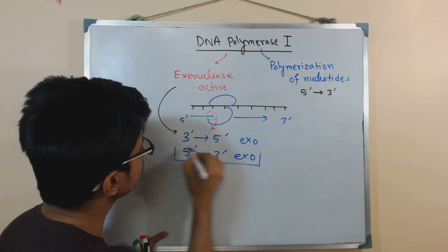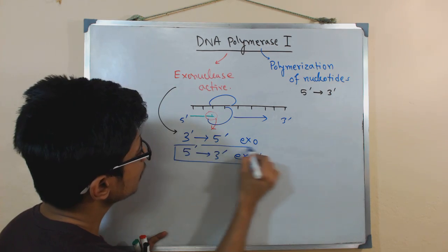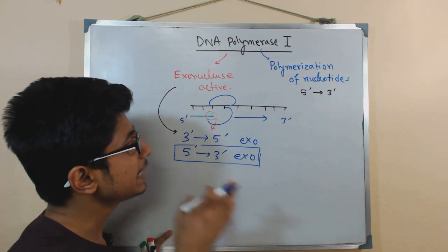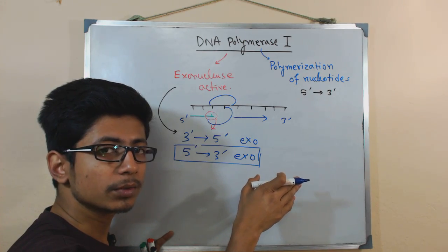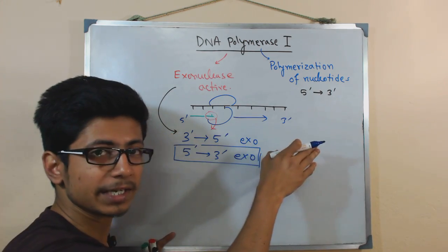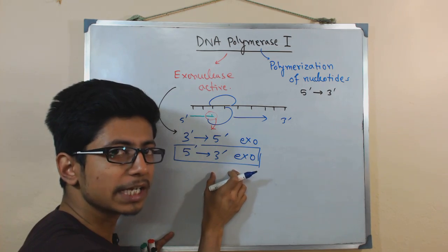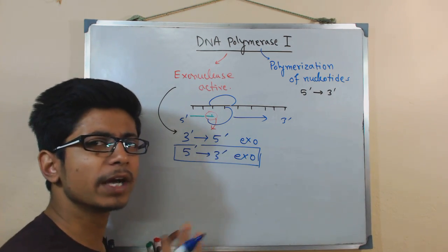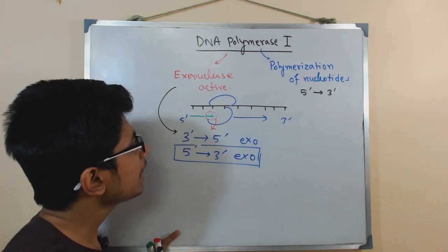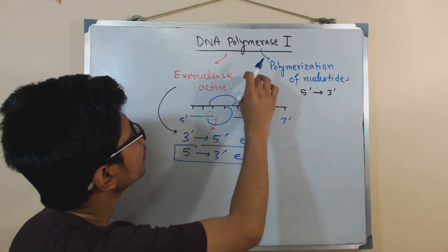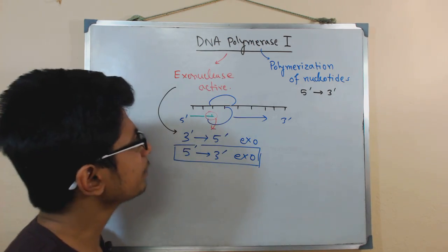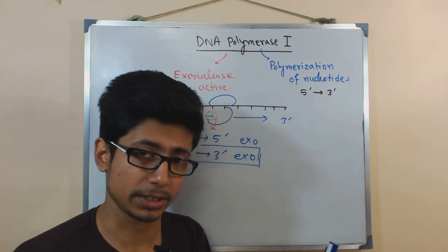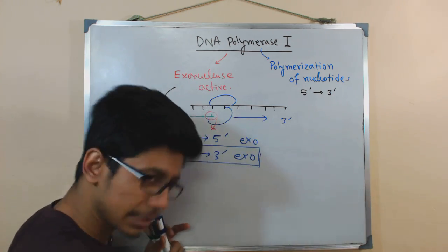What makes this enzyme slightly unique is that DNA Polymerase I also has a 5-prime to 3-prime exonuclease activity. This means it can cleave DNA nucleotide sequences in the same direction in which it is polymerizing. That is a kind of unique feature. So these are very vital features — this enzyme can both polymerize and cut in both directions.